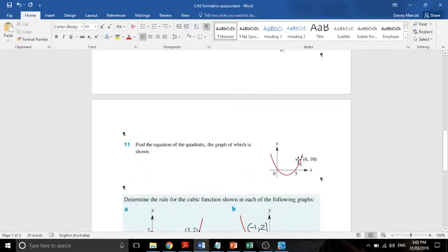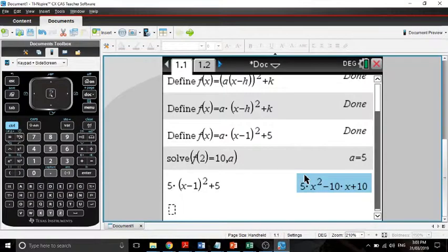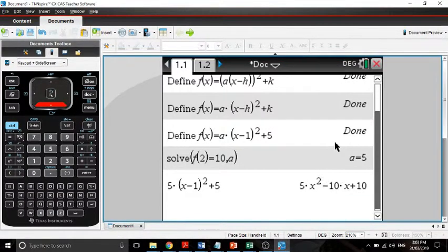If we look at the next one, we've got this. We don't have turning point form. What do we have? Well, we've got our x intercepts. So we have to put this one in factor form. So we're going to define, define g of x equals a times x minus b times x minus c. I'm going to leave it as that.